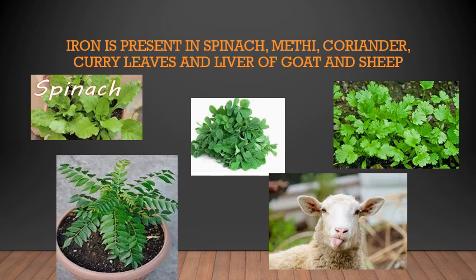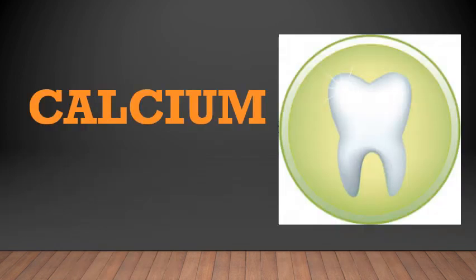Iron is present in spinach, methi, coriander, curry leaves, and the liver of goat and sheep. Especially for people who eat non-veg, consuming the liver of goat or sheep provides a high content of iron, which helps to improve our blood. Spinach, methi, coriander, and curry leaves are things we use every day in our lives.